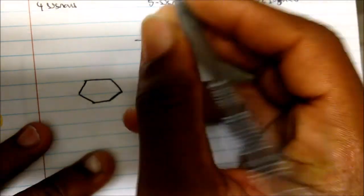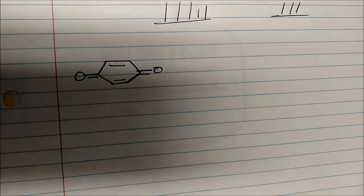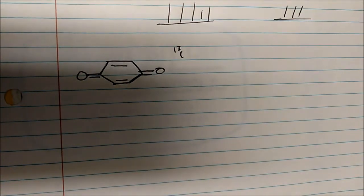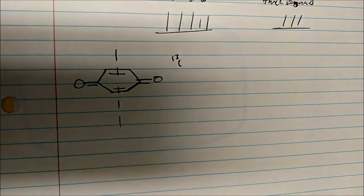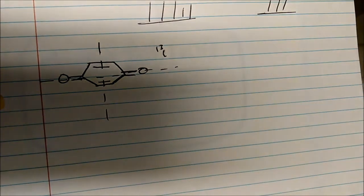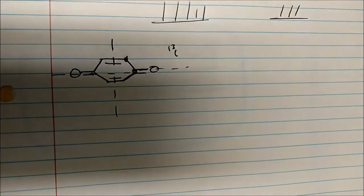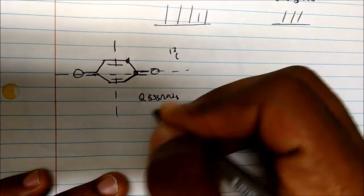What if I give you this molecule and ask how many signals you would see? The first thing to ask is: where's the plane of symmetry? It's right down the middle, and I also have a plane of symmetry vertically. So I can cut this molecule two ways. How many different carbons are there? I have one and I have two — everything else is the same. Therefore, I will only see two signals on a carbon-13 NMR.